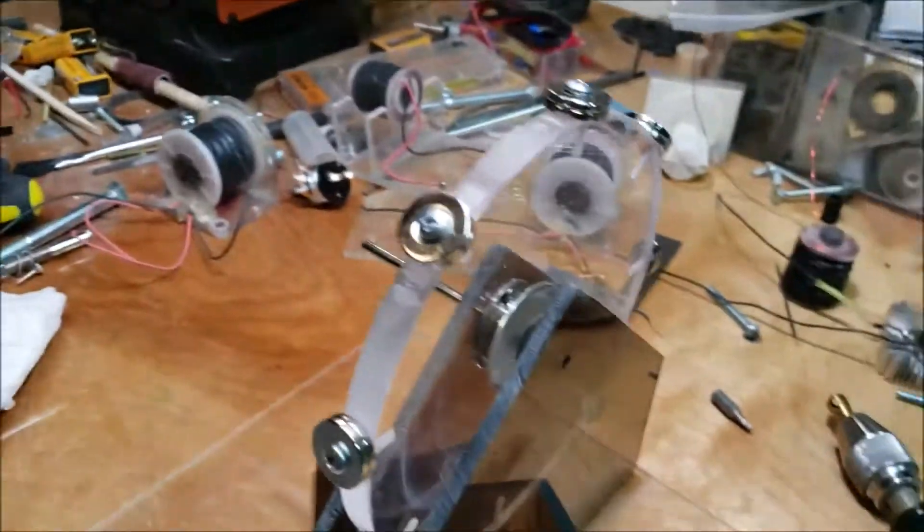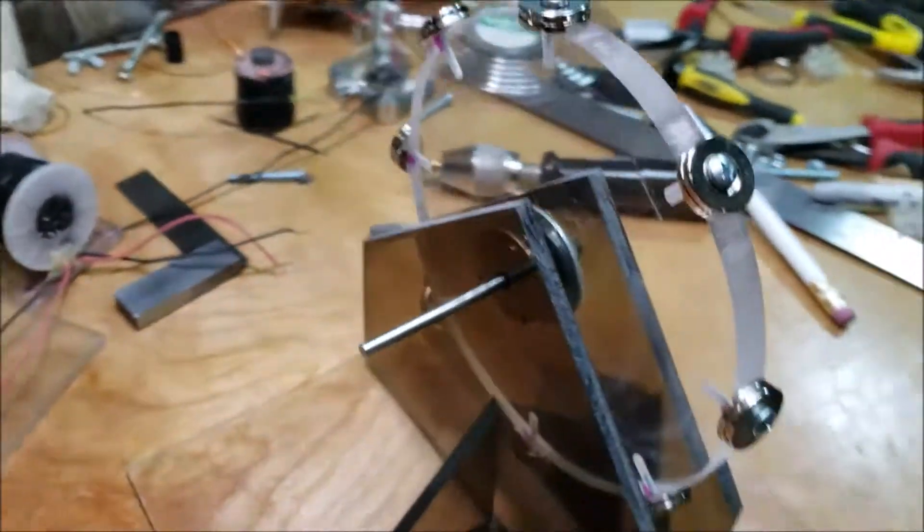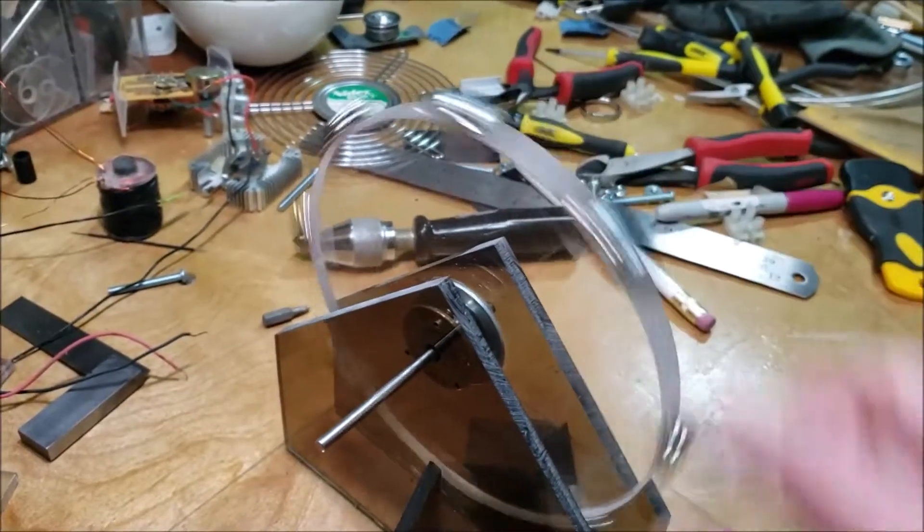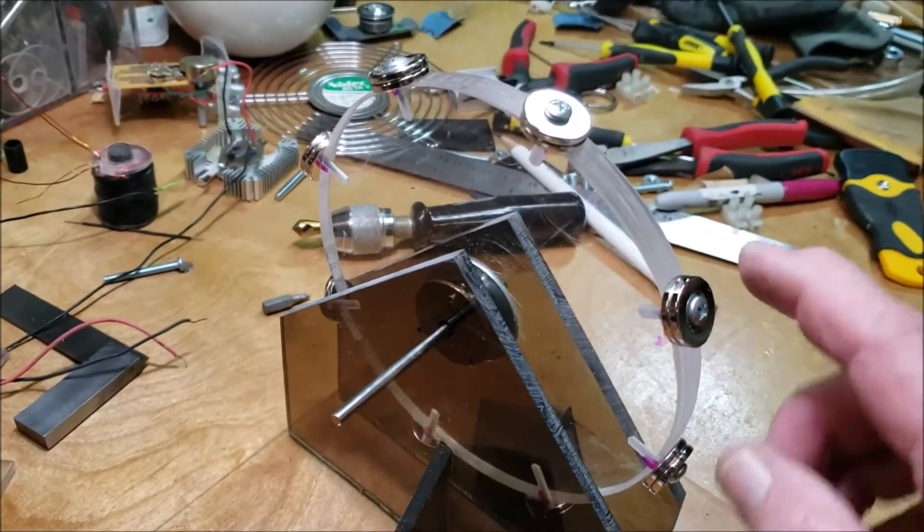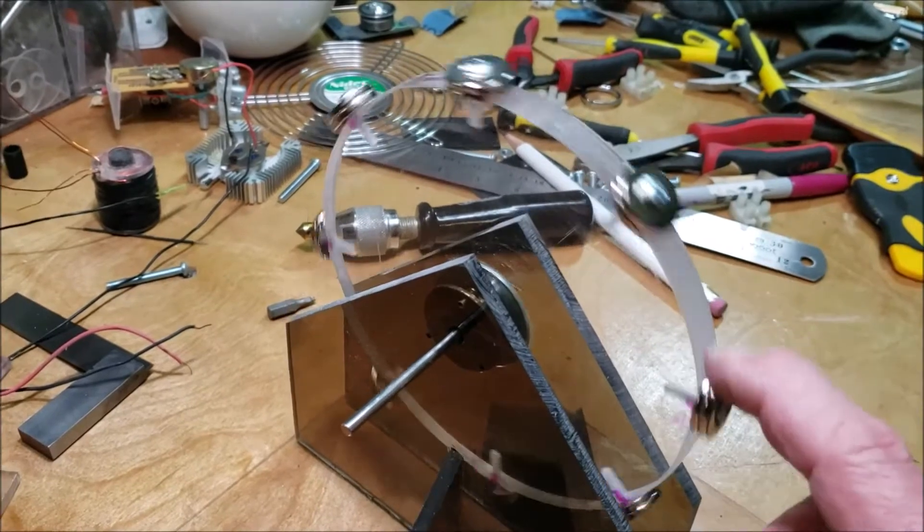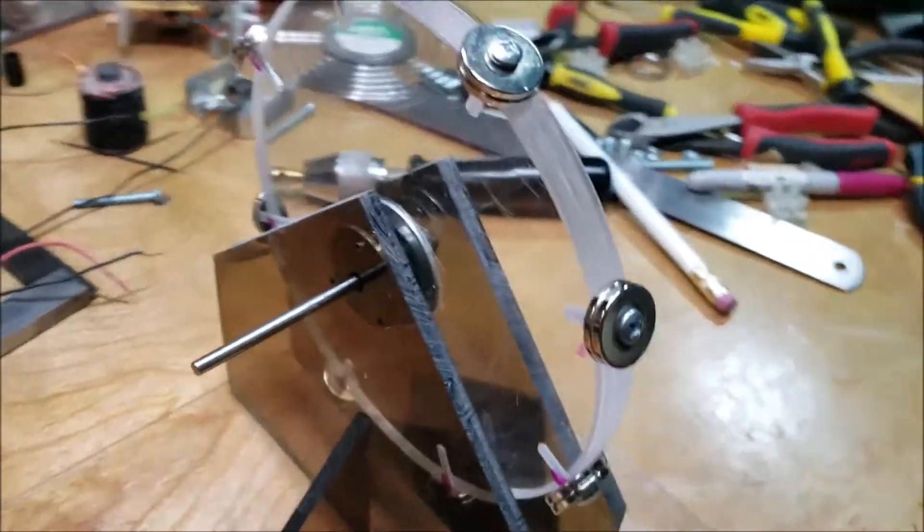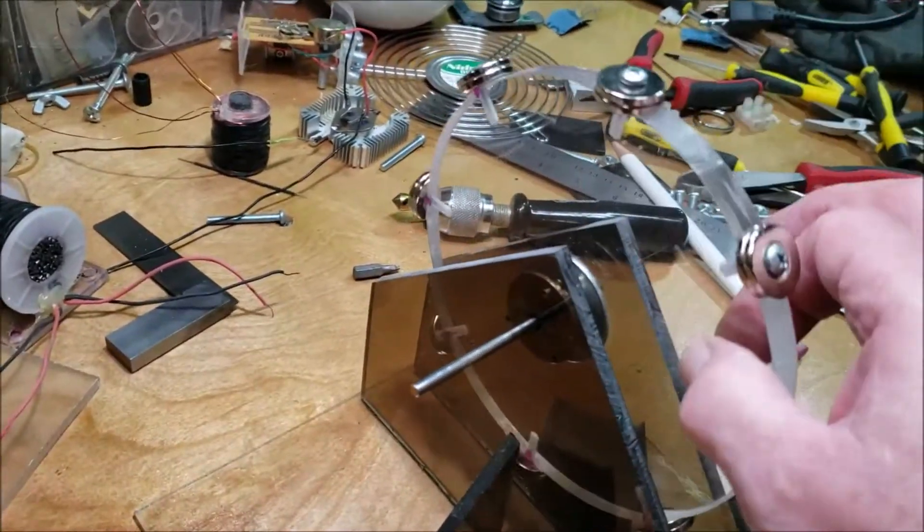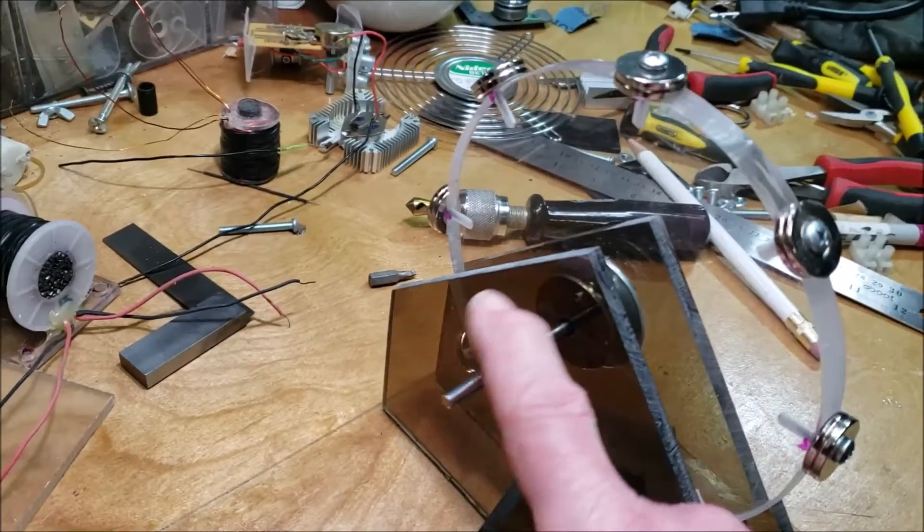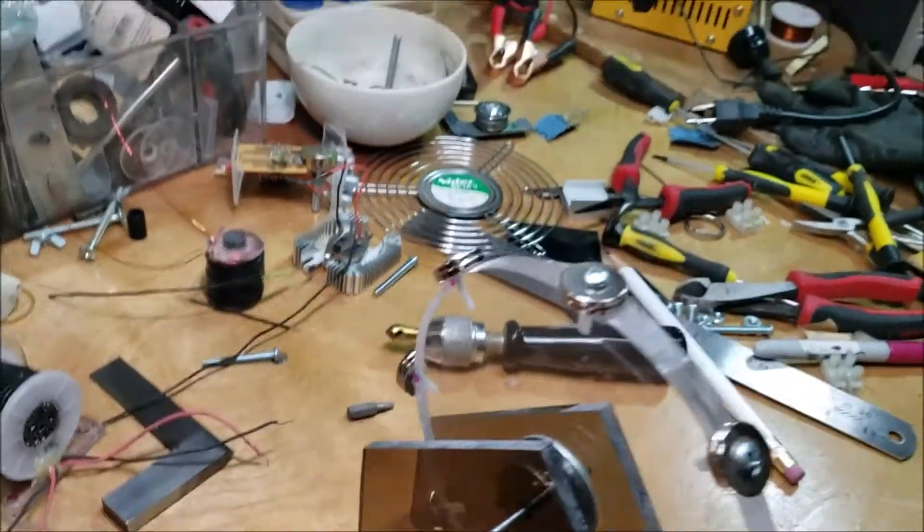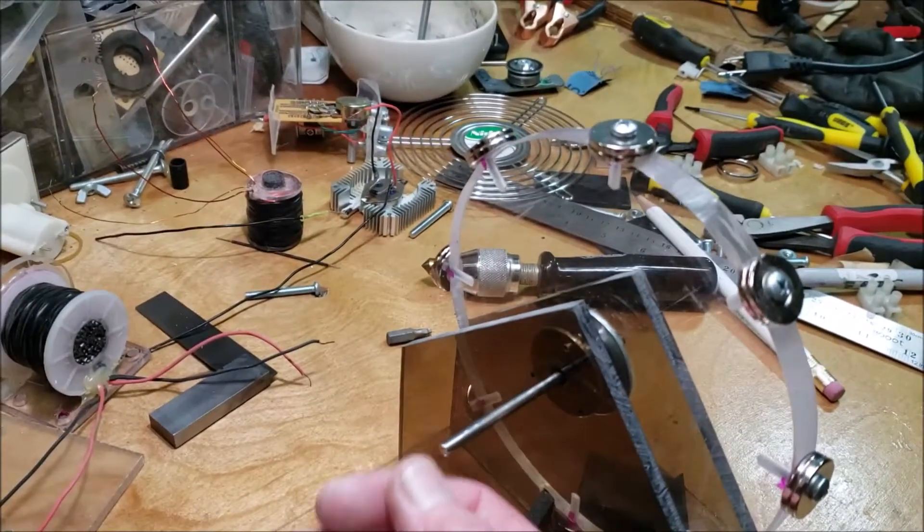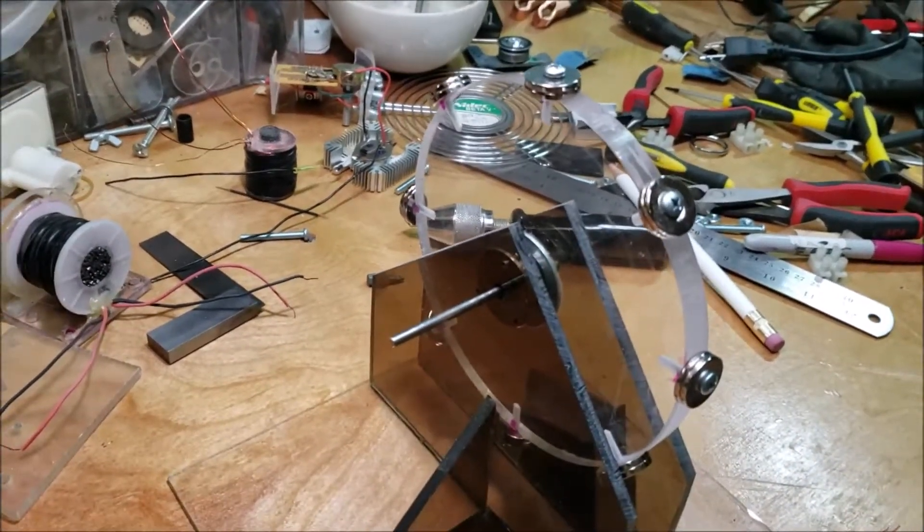But yeah, I decided to do an upright rotor and I put two magnets on each one, north south, north south, north south. And this rotor was already made without the magnets. It had this shaft on it, so I decided just to leave it long. It was from a project that I was going to do like 10 years ago.